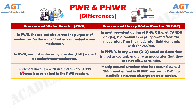Number 3. Enriched uranium with around 3–5% uranium-235 isotope is used as fuel in pressurized water reactors. Whereas, mostly natural uranium, which has around 0.7% uranium-235, is used as fuel in pressurized heavy water reactors, as heavy water based on deuterium has negligible neutron absorption cross section.